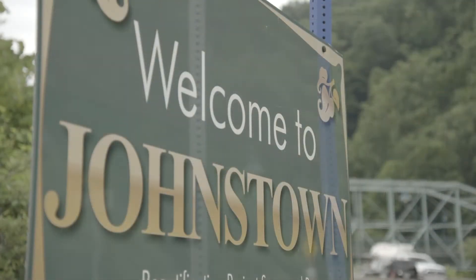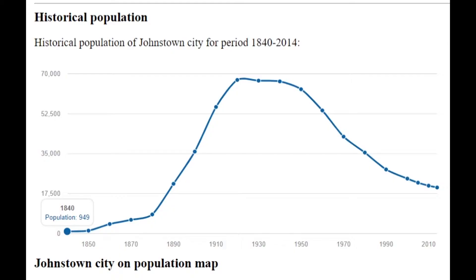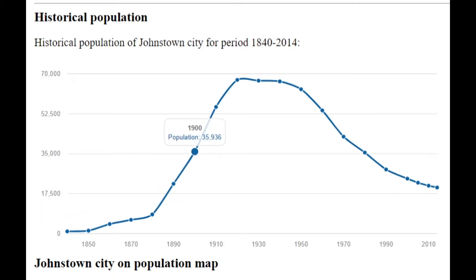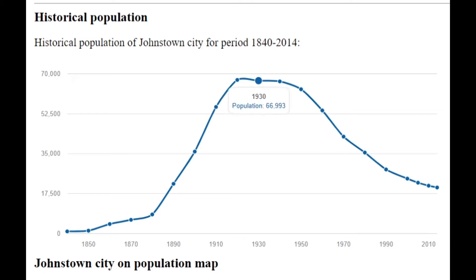My town Johnstown has a land area of about 6 square miles and a population of 20,000 people, but it wasn't always that size. As we learned in the social studies lesson, Johnstown's population reached its peak in 1920, with a population of about 67,000. The geographic size of the city hasn't changed much at all since then.